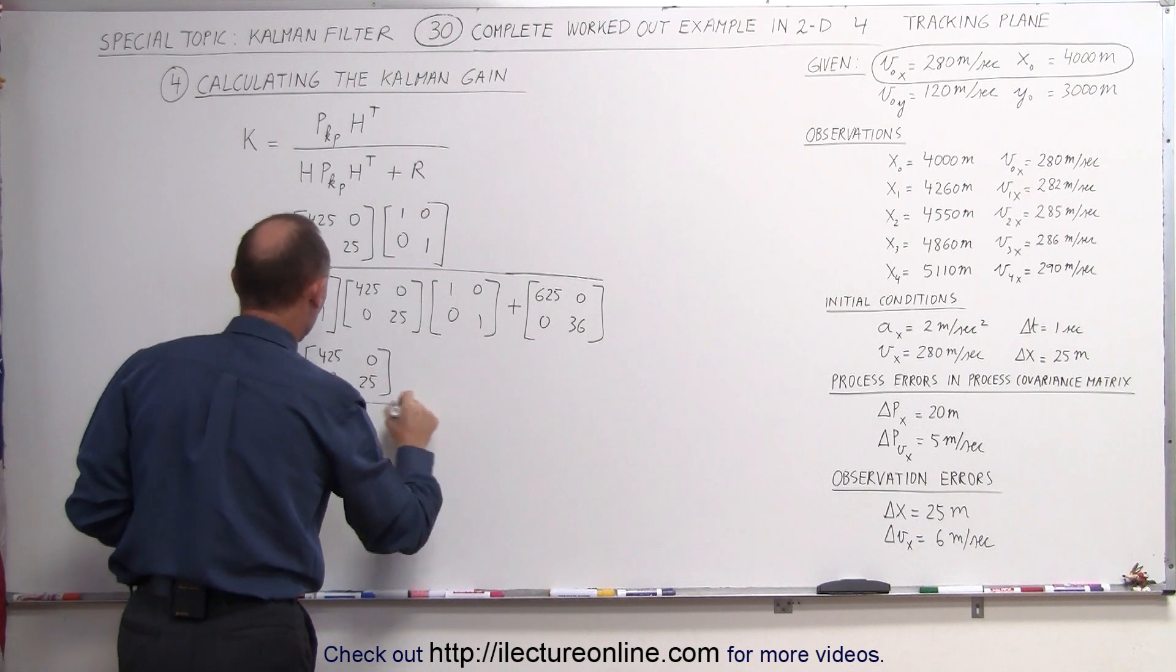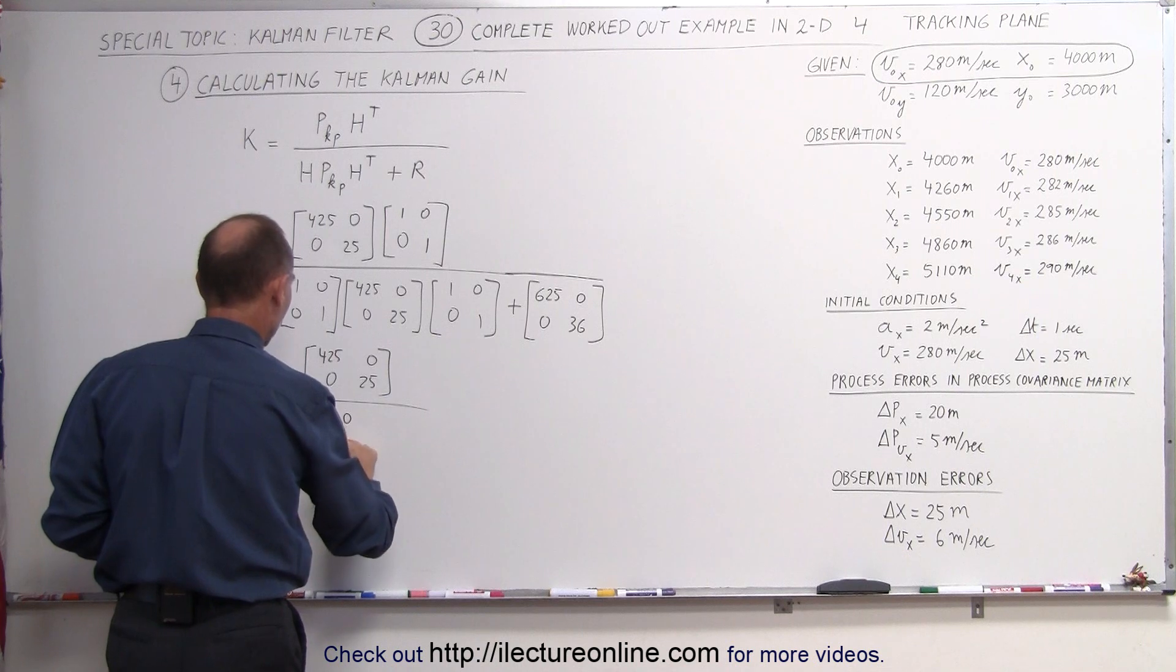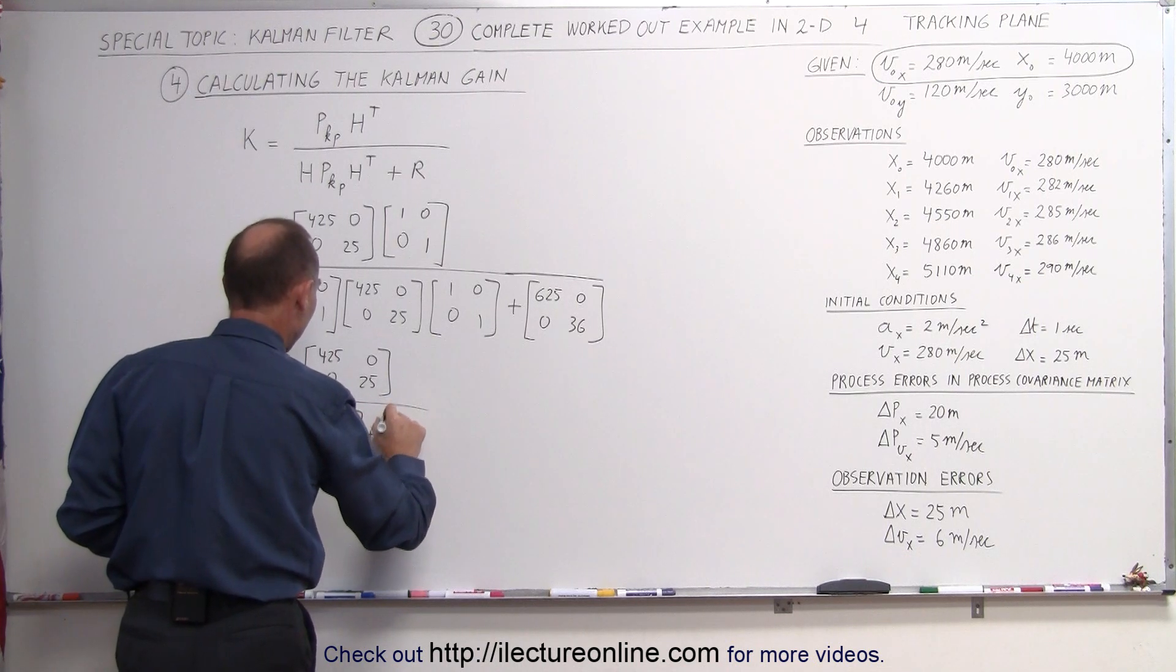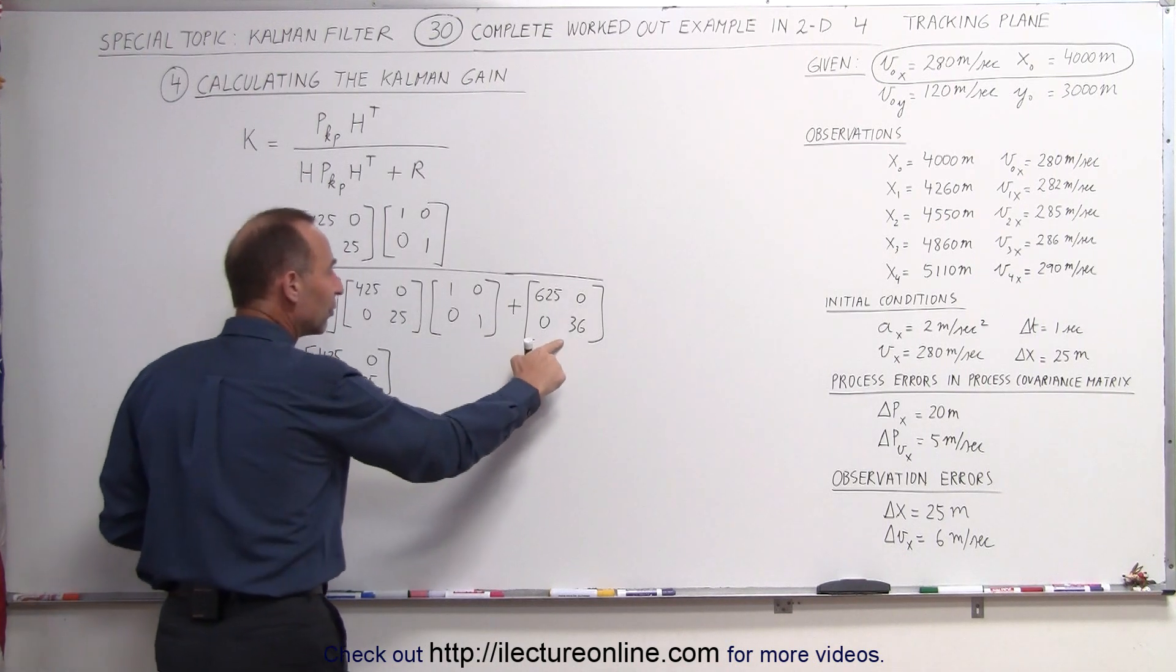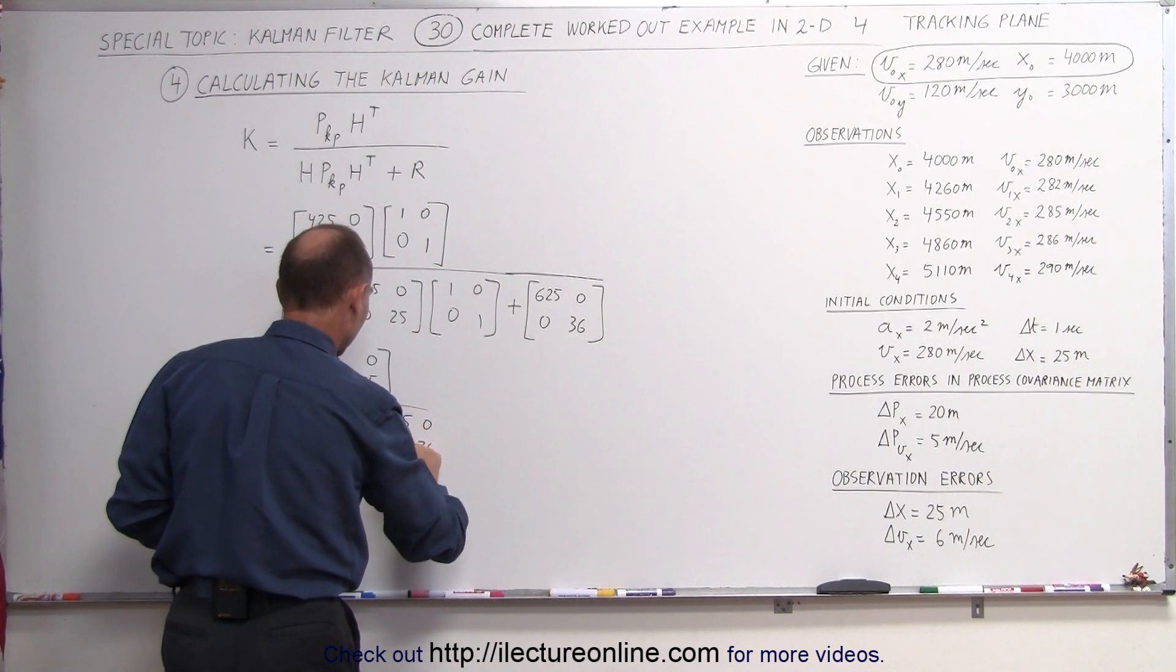In the denominator we'll get the 425, 0, 0, 25. And we're going to add to that the matrix that we got from the observation errors, 625, 36, 0 and 0.